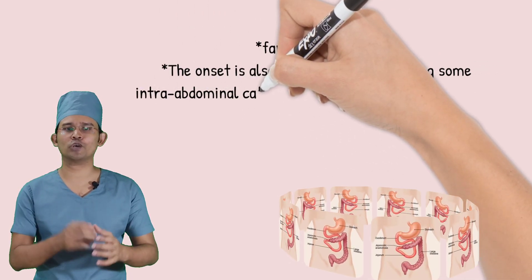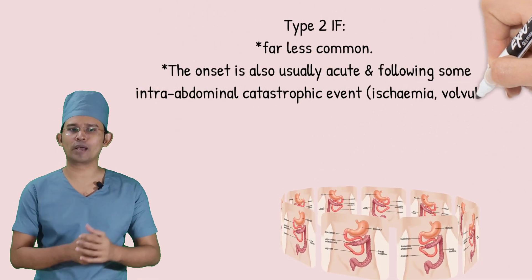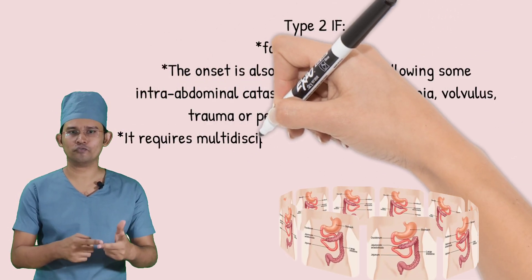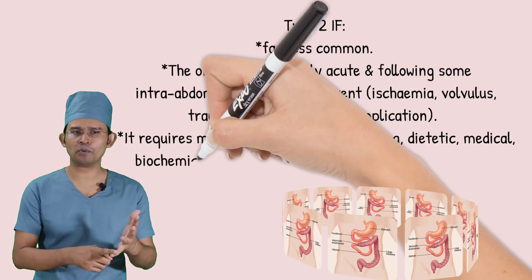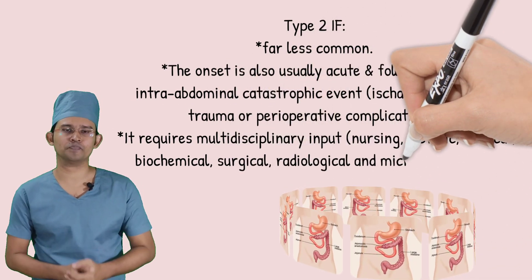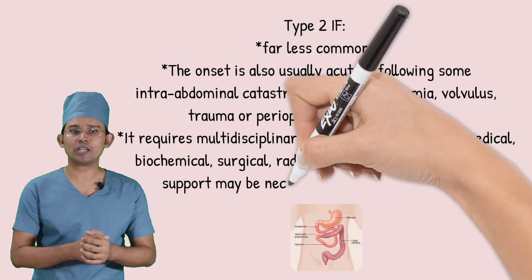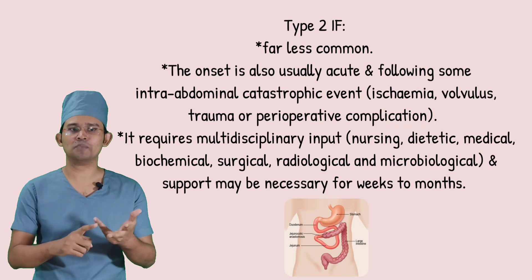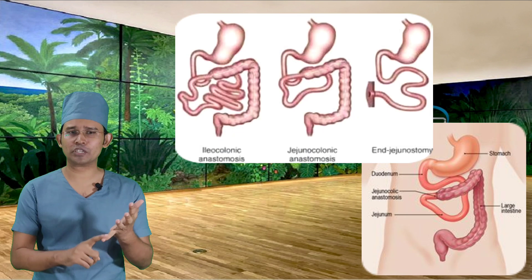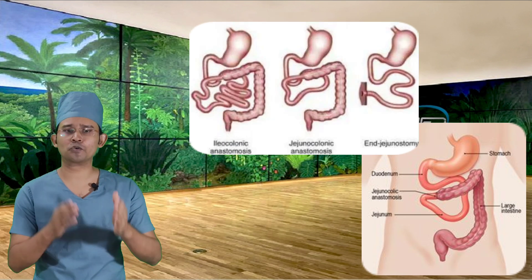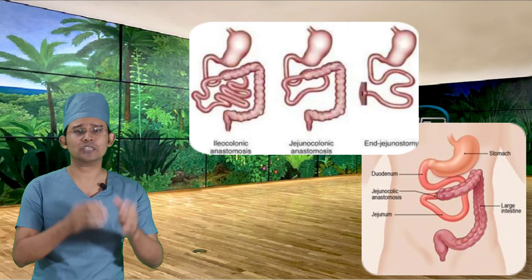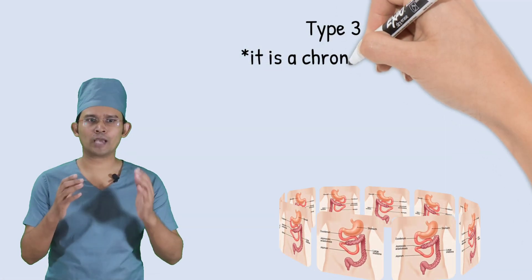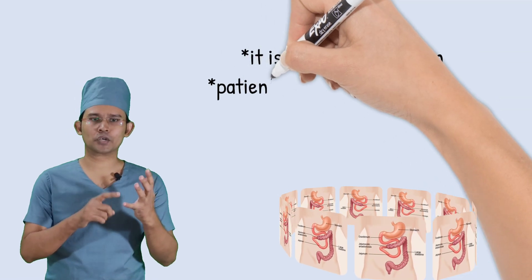Type 2 intestinal failure is less common, and the onset is usually acute following intra-abdominal catastrophic events such as ischemia, volvulus, trauma, or perioperative complications. It requires multidisciplinary input including nursing, diabetic, medical, biochemical, surgical, radiological, and microbiological support.